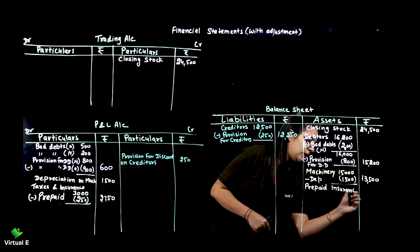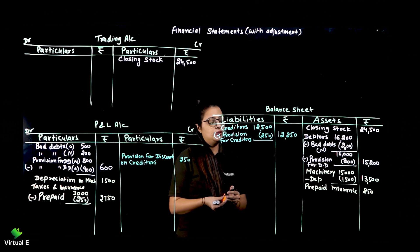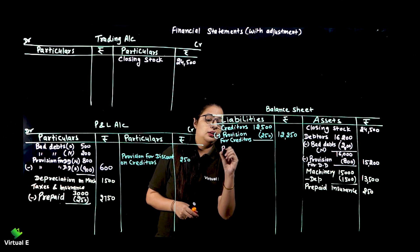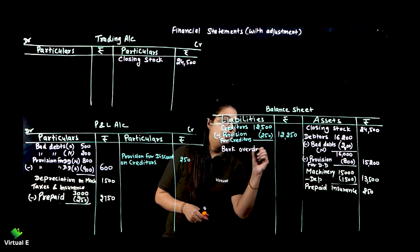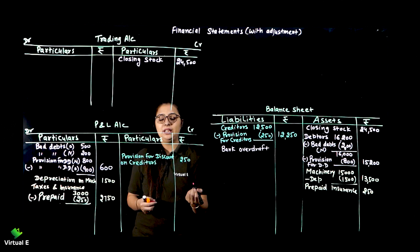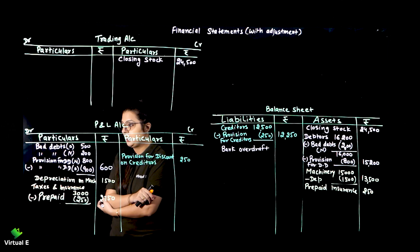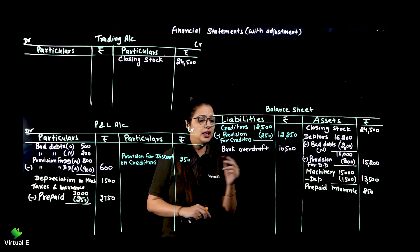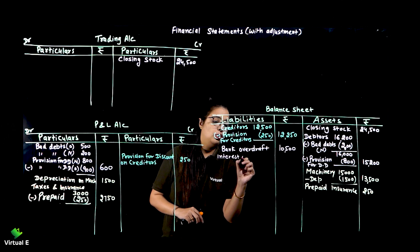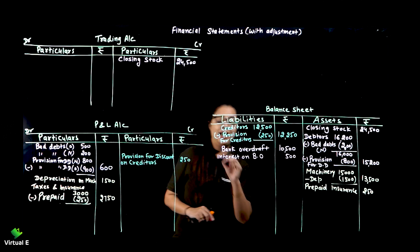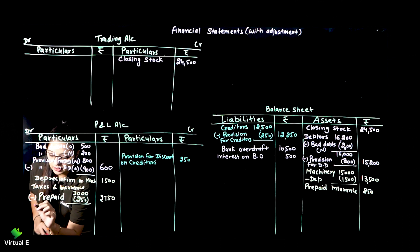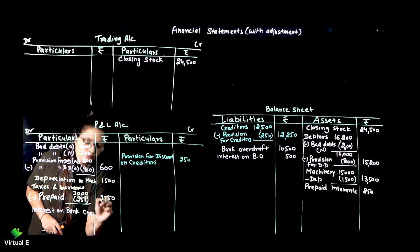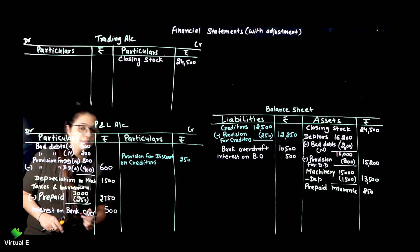Prepaid insurance is 250. Then interest on overdraft is 500 - we are paying 500 on the overdraft. Bank overdraft is a liability - you need to pay it. Bank overdraft is 10,500, plus interest on overdraft 500. You can add and show, or you can show interest on bank overdraft of 500 on the debit side of profit and loss.